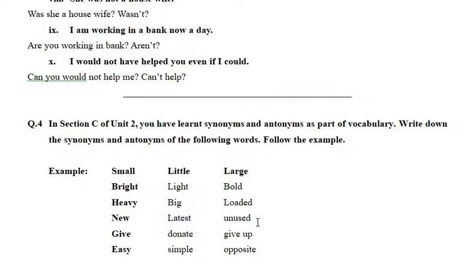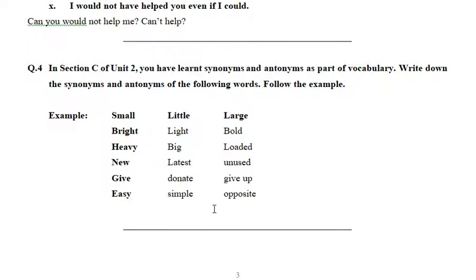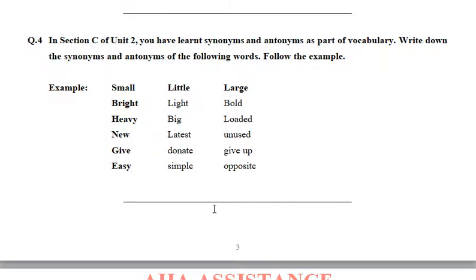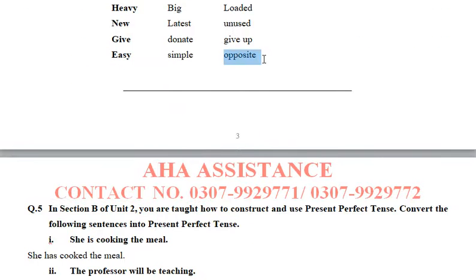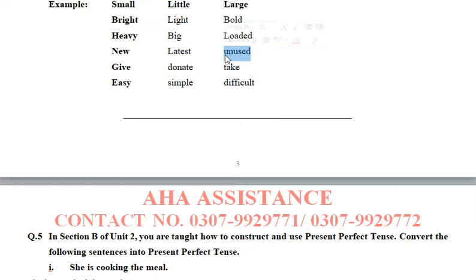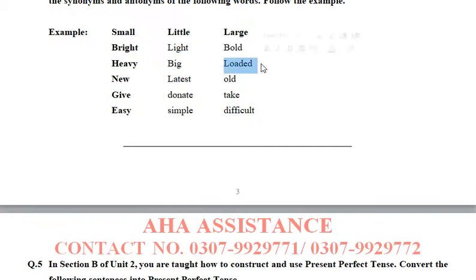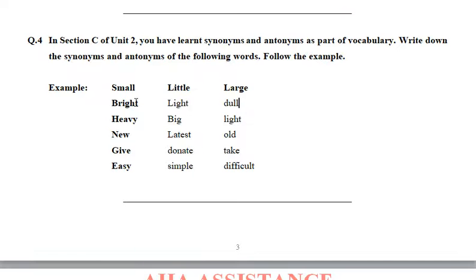In question number 4, you have to write synonyms and antonyms, which you have studied in unit 2. Synonyms are words with the same meaning, and antonyms are opposites. For example, antonyms: easy–difficult, give–take, new–old, heavy–light, bright–dark. Synonyms: easy–simple, give–donate, new–latest, big–large, heavy–weighty, bright–shining.